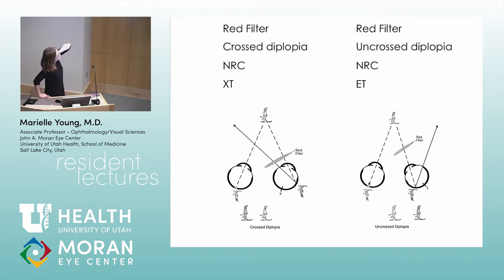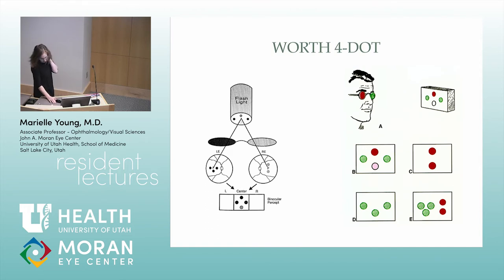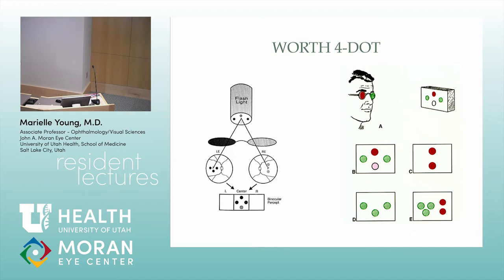With the red filter test in someone with normal retinal correspondence and esotropia, they have uncrossed diplopia. You put a red filter in front of one eye and have them tell you where the red image is. With the Worth 4-dot test, you put a red lens over the right eye and a green lens over the left eye. The right eye sees two reds, the left eye sees three greens, but if they're fusing, they should see four lights.